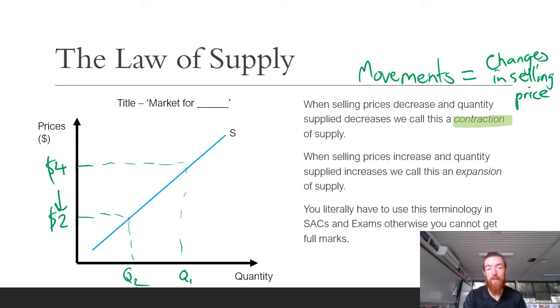And we call that a contraction of supply. So businesses supplying less because it's going to be less profitable. And then if we do the opposite of that, if the price increases from two dollars to four dollars, we're going to move from Q2 to Q1, we call that an expansion of supply as businesses are increasing the amount they supply because it's going to be more profitable. Once again, that terminology of expansions and contractions is incredibly important.